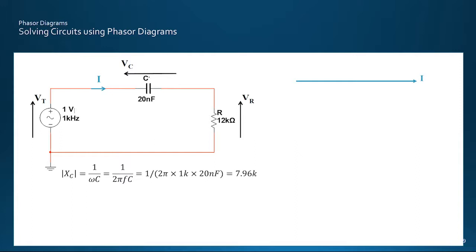Now in this series circuit, the current is common to all the components, and so we can use it as a reference direction. And the voltage across a resistor is in phase of the current passing through it, and so we can draw a vector representing the Vr aligned with our reference current. The voltage across the capacitor, however, lags the current by 90 degrees, so we can draw a vector representing Vc down in that direction.